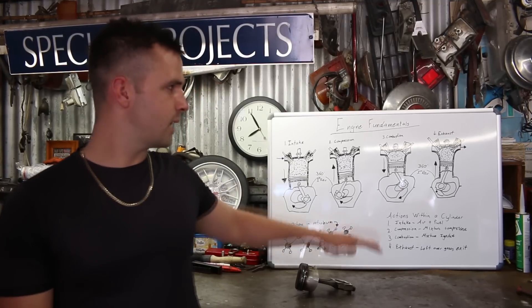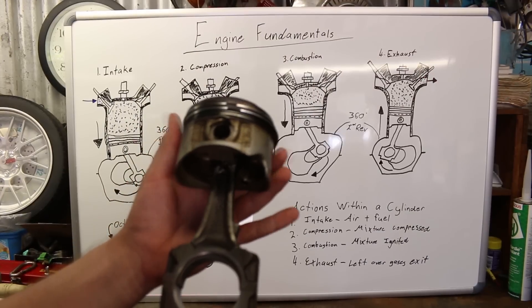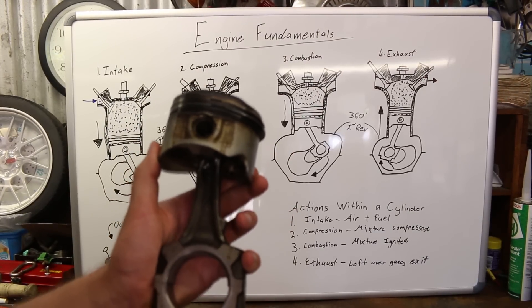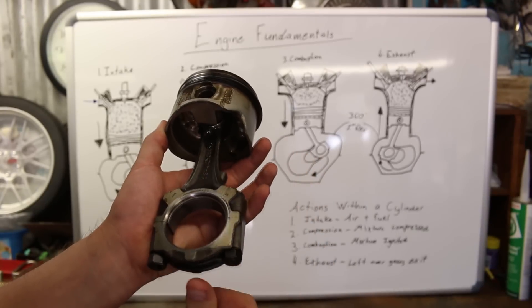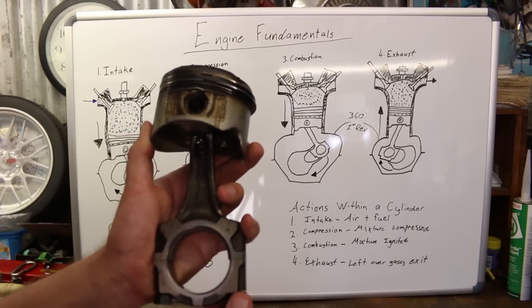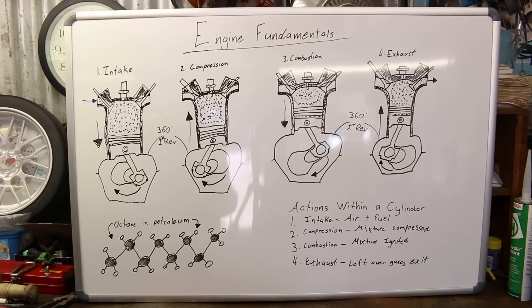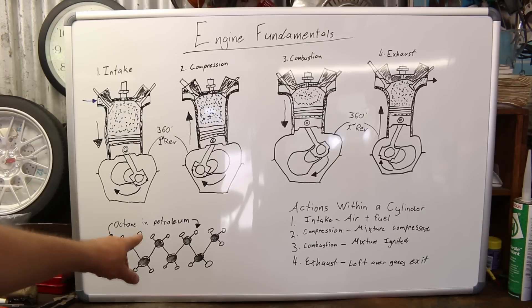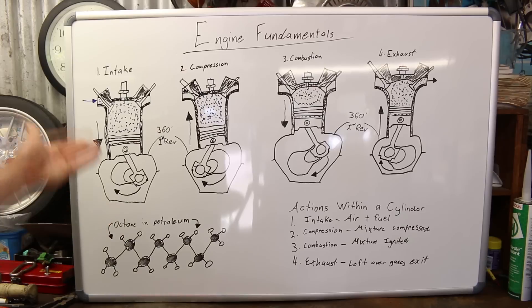Now let's look at this diagram on the whiteboard and discuss the four strokes of a typical engine. Before getting into the four strokes, here's a physical model of the parts. This top piece is called the piston or piston head. The shaft that comes down is the connecting rod. These two shiny rings up here are the compression rings that provide the gas-tight seal against the cylinder wall. Also, this here is octane — a hydrocarbon — this is what the chemical compound looks like, and this is what's in the fuel we use to create the chemical reaction.